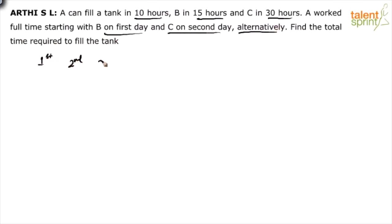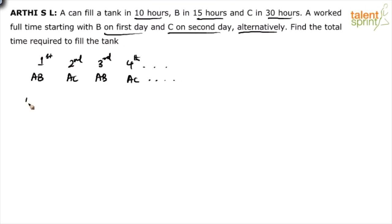A and B, A and C, A and B, A and C — the cycle continues. The amount of work A and B can do in one day is 1/10 + 1/15. The amount of work A and C can do in one day is 1/10 + 1/30. Simplifying A and B: the LCM is 30, so 3 + 2 = 5/30.